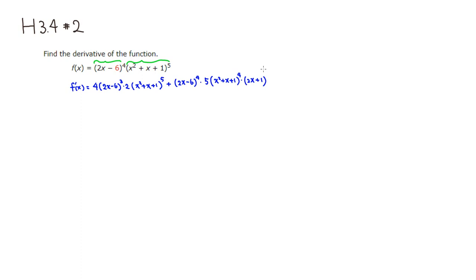Then we just need to clean it up a little bit. We have 2x minus 6 to the third power — there are four of those, so we take three of them and factor them out. This is going to be quantity 2x minus 6 raised to the third power. And we have x squared plus x plus 1 to the fifth power — there are four of them, so we take those out as x squared plus x plus 1 raised to the fourth power.